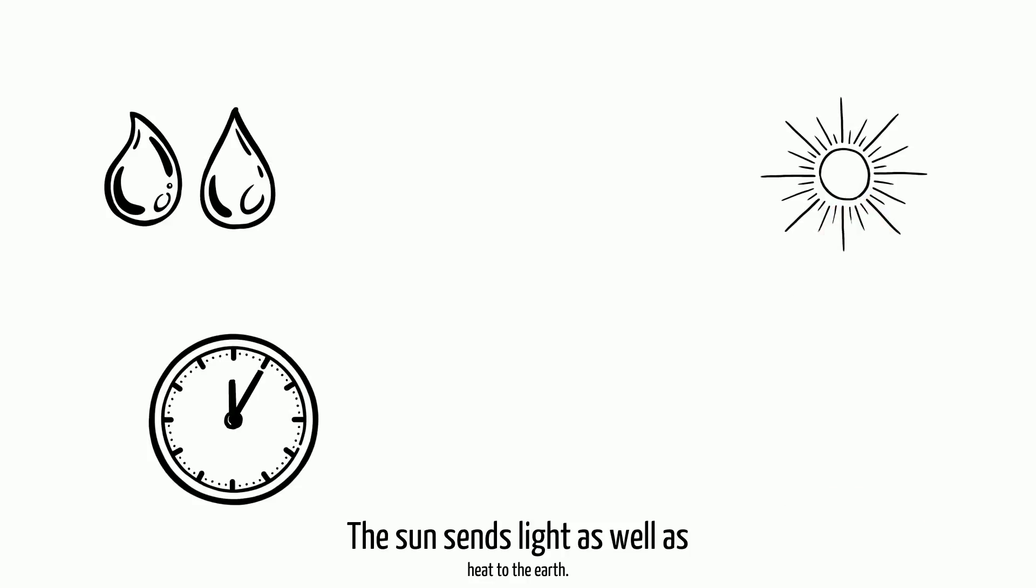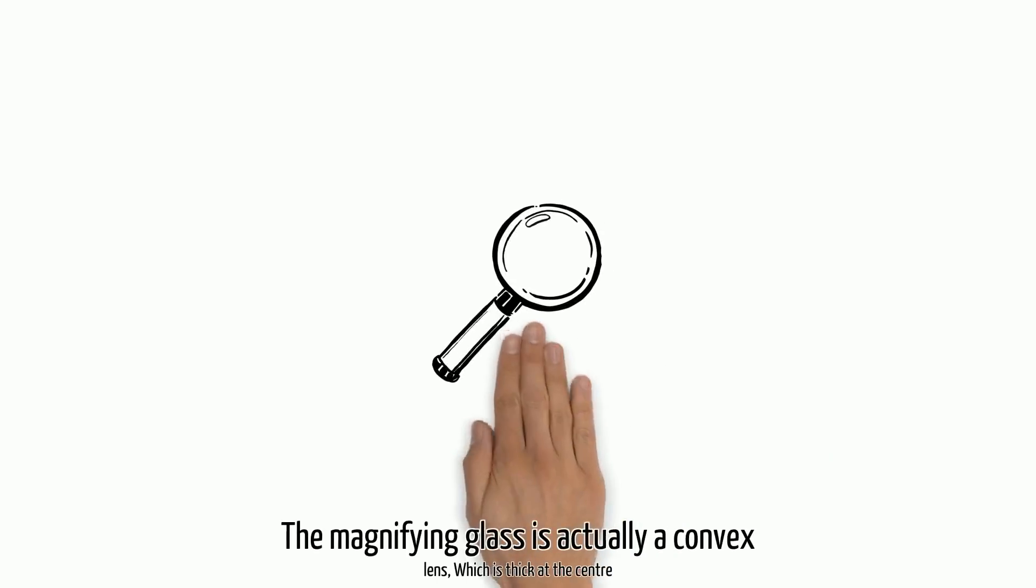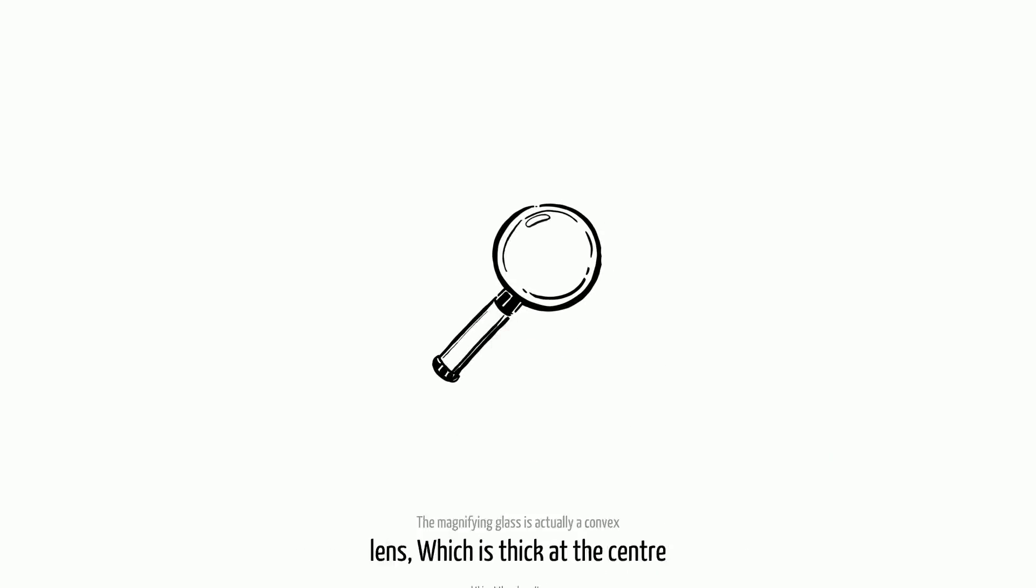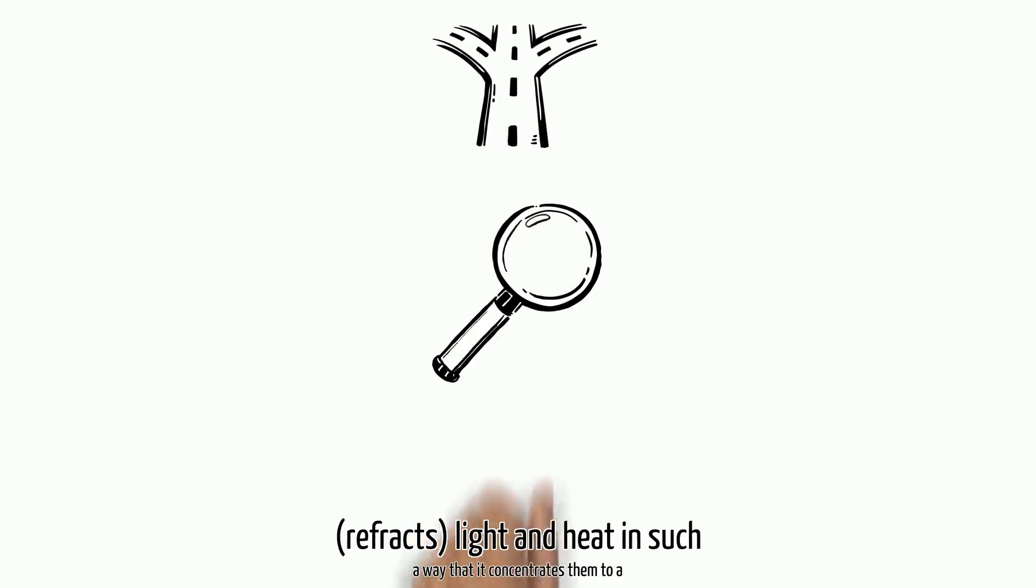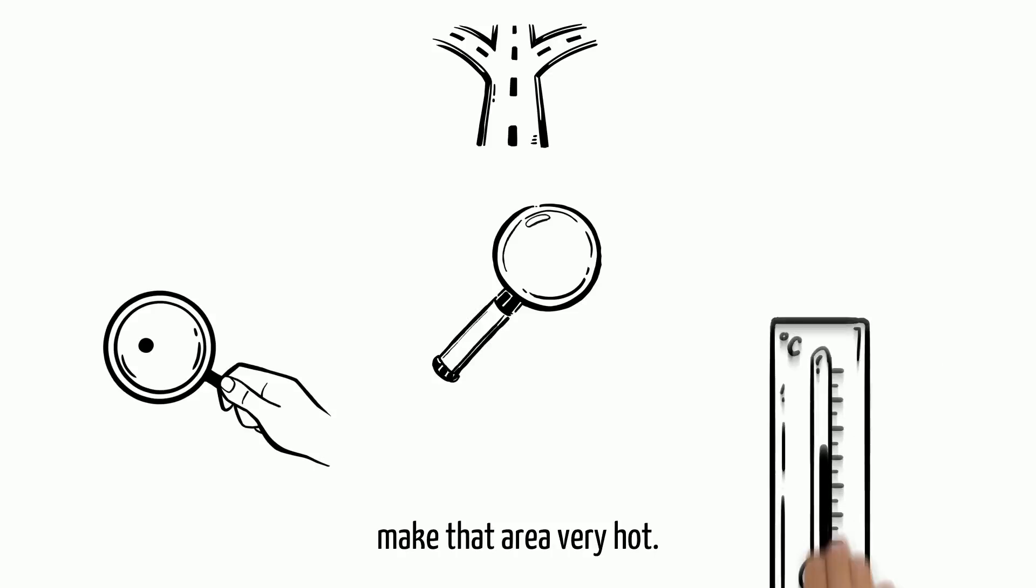The sun sends light as well as heat to the earth. The magnifying glass is actually a convex lens which is thick at the center and thin at the edges. It converges and refracts light and heat in such a way that it concentrates them to a small area which makes that area very hot.